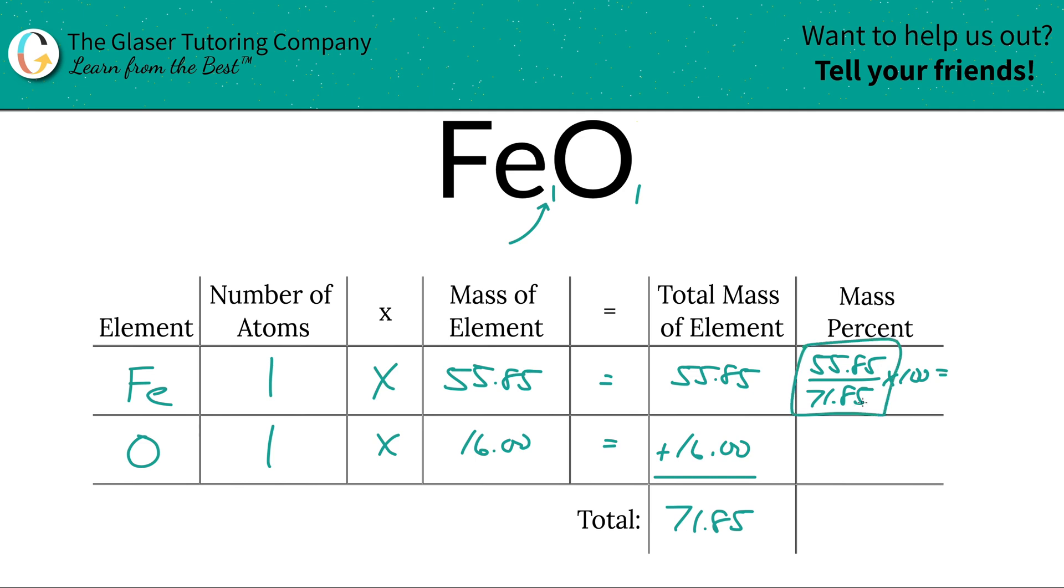Also don't worry about the units because they would both cancel. Whatever unit this had, gram per mole or AMU, should have been the same as this. So they would have canceled and percents are unitless anyway. Let's get onto the number. So the percent here is roughly about 77.73%.